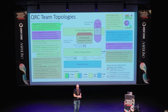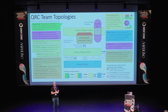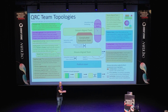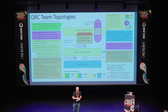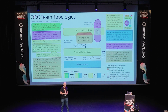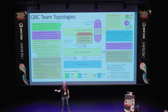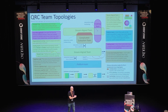Then you also have a complicated subsystem team — teams you don't really want too many of because they are expensive. They do difficult stuff like machine learning or graphical processing — things that require real experts, not an ordinary team. And then there's the last type: the enabling team. The main goal of the enabling team is helping stream-aligned teams move forward. Like in Scrum terminology, if you have any impediment, call them and they will come and help you. Those are the four teams — they say you don't need any more than this.